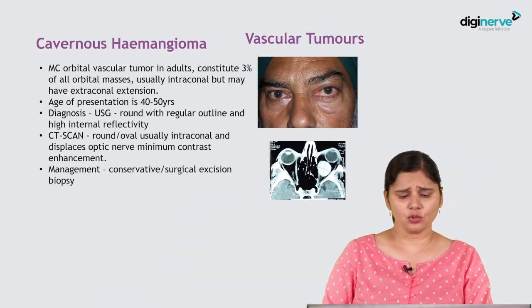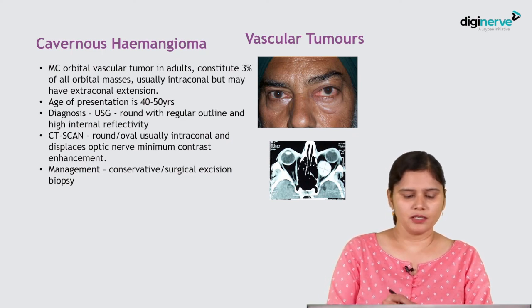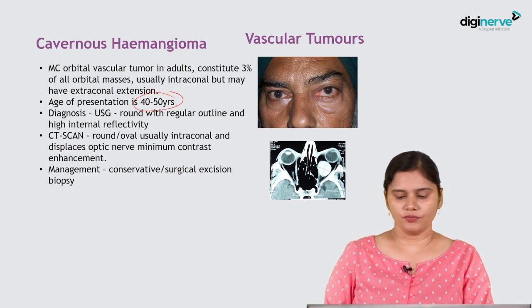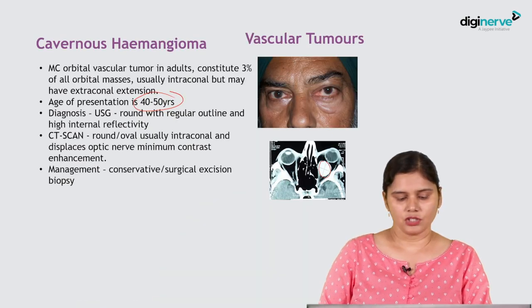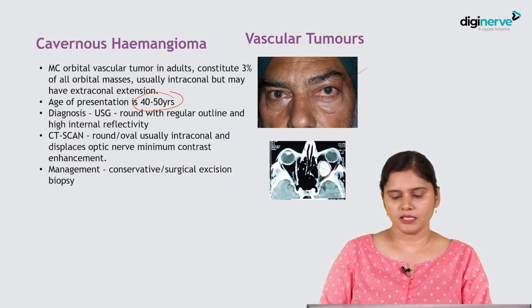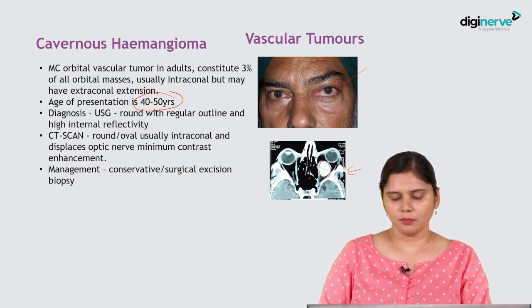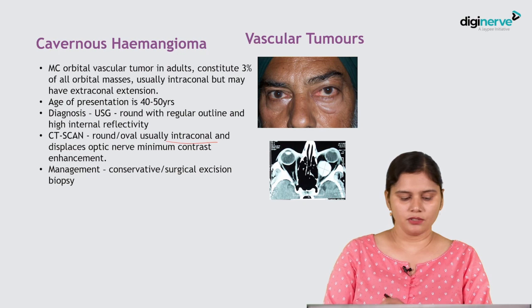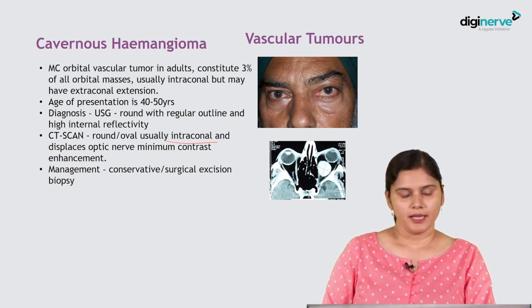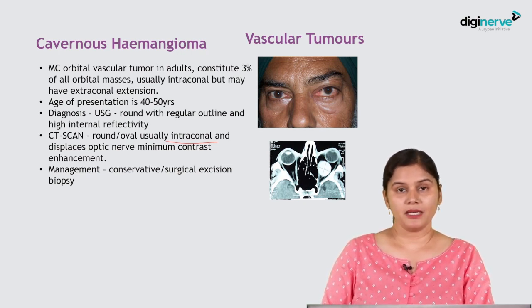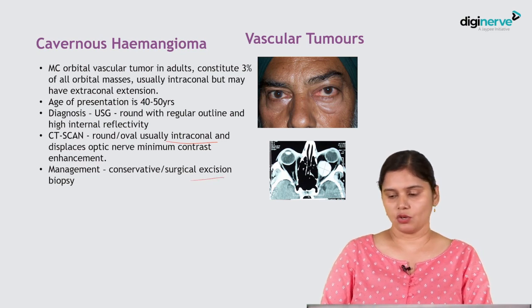Cavernous hemangiomas are the most common vascular tumors of adults, usually presenting at 40 to 50 years. On ultrasound, there is a regular outlined mass present behind the eyeball causing proptosis. On CT scan, it is usually intraconal, displacing the optic nerve. It is managed by surgical excision of the tumor.